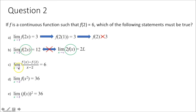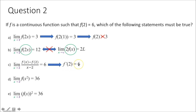Part c gives the limit as x approaches 2 of [f of x minus f of 2] over [x minus 2] equals 6. This is the alternative form of the derivative, meaning f prime of 2 equals 6. It's not necessarily true because we're given f of 2 equals 6 — that doesn't mean f prime of 2 equals 6.